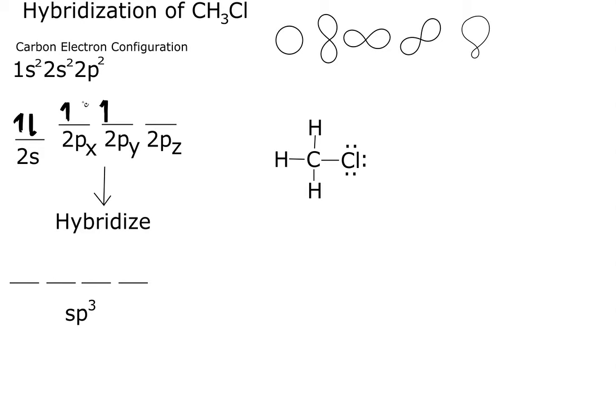Now, if we look here, we have two places where we can bond, we can bond here, and we can bond here. However, we have one, two, three, four times we're going to bond, so that wouldn't be possible.